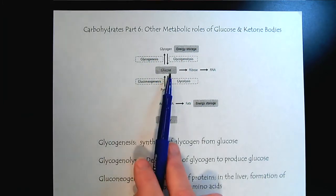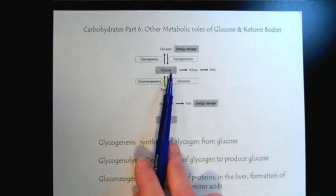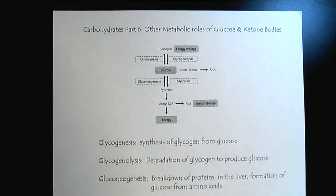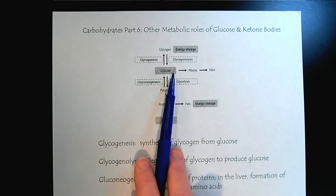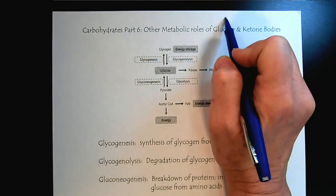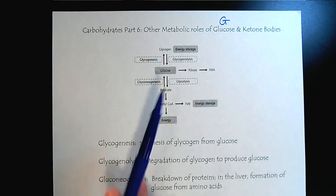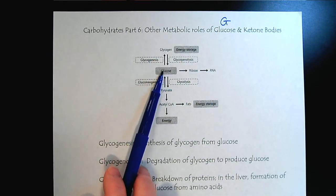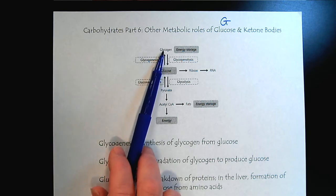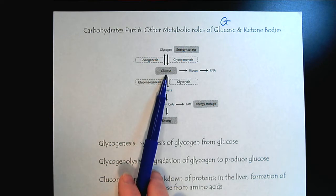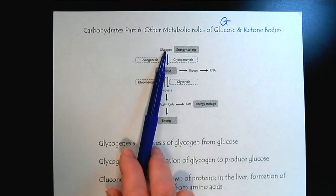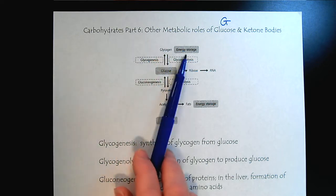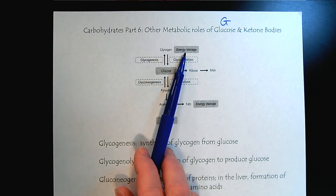We recognize glucose is the star of the show here. We've looked at the fact that if we have too much glucose, then we can store it as glycogen, a polysaccharide. So we have our monosaccharide glucose and our polysaccharide glycogen, and that's all about energy storage.